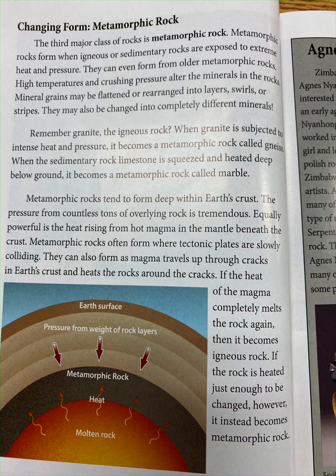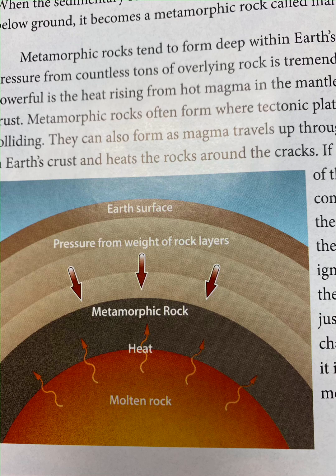Equally powerful is the heat rising from hot magma in the mantle beneath the crust. Metamorphic rocks often form where tectonic plates are slowly colliding. They can also form as magma travels up through cracks in earth's crust and heats the surrounding rocks. If the heat of the magma completely melts the rock, it becomes igneous rock. If the rock is heated just enough to be changed, it instead becomes metamorphic rock.